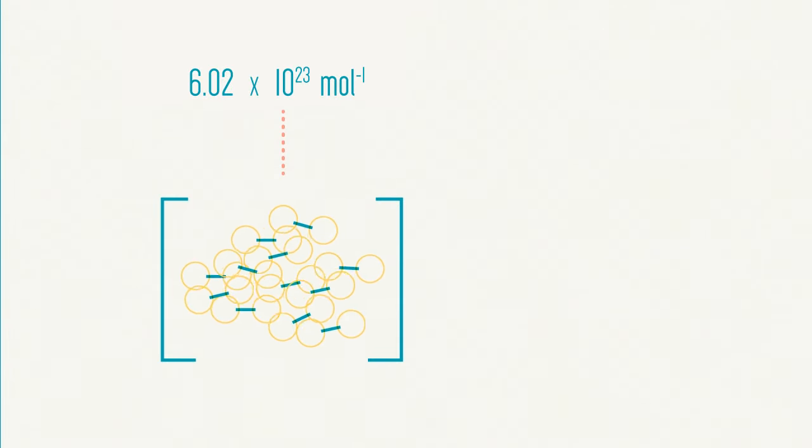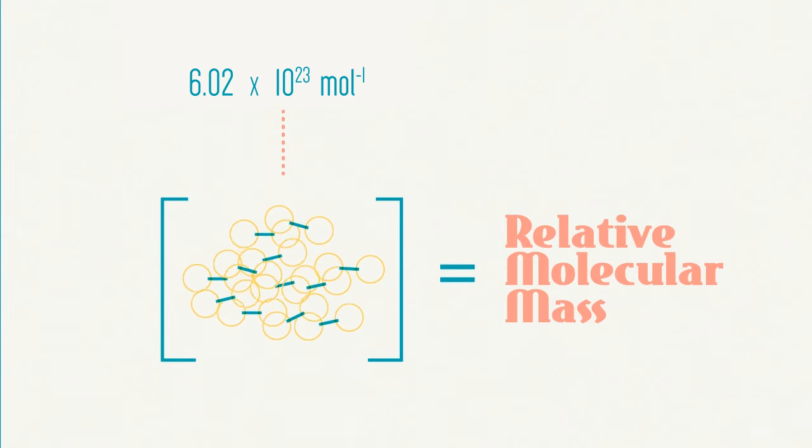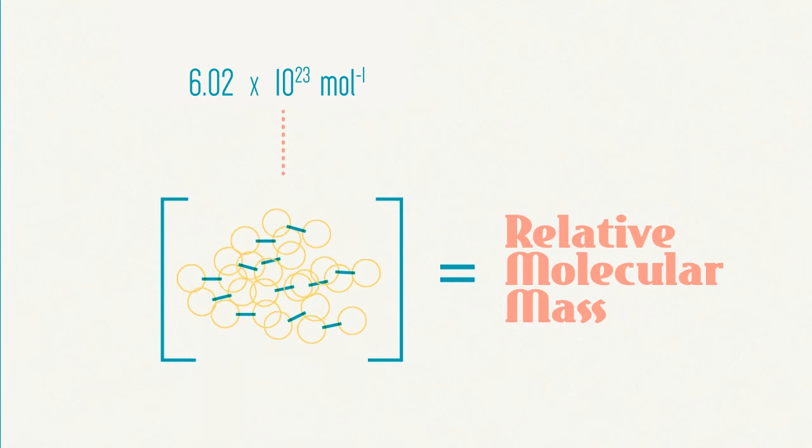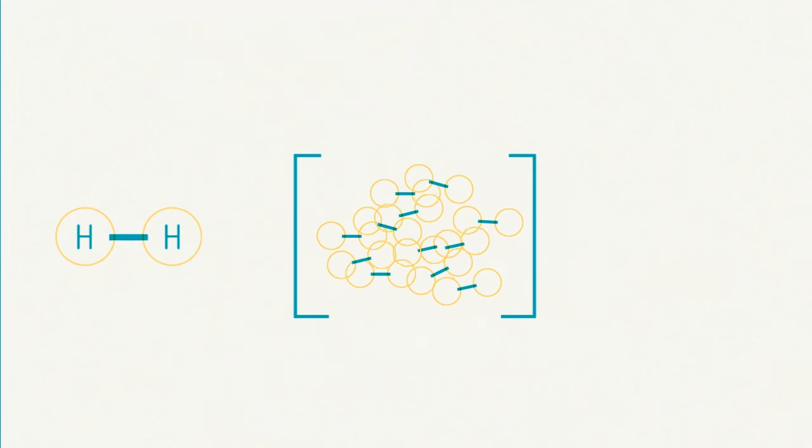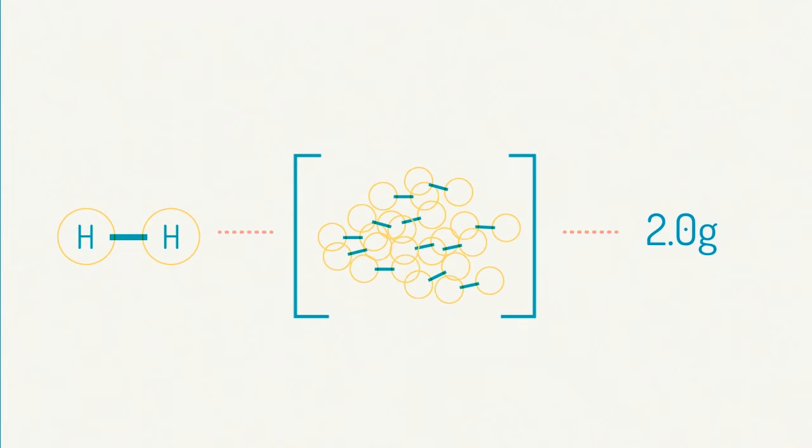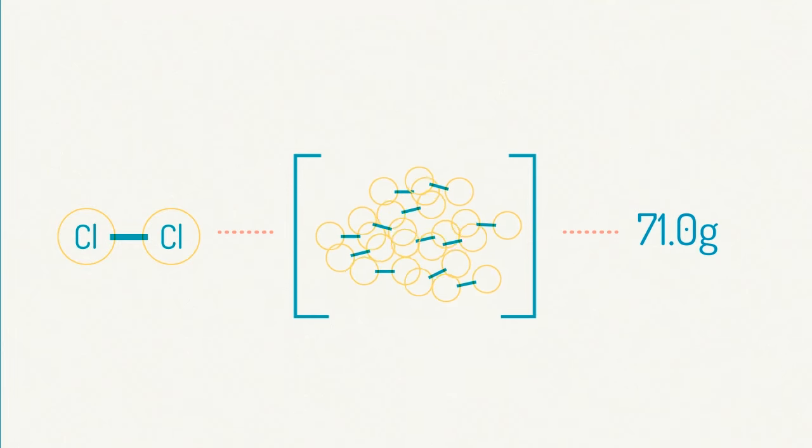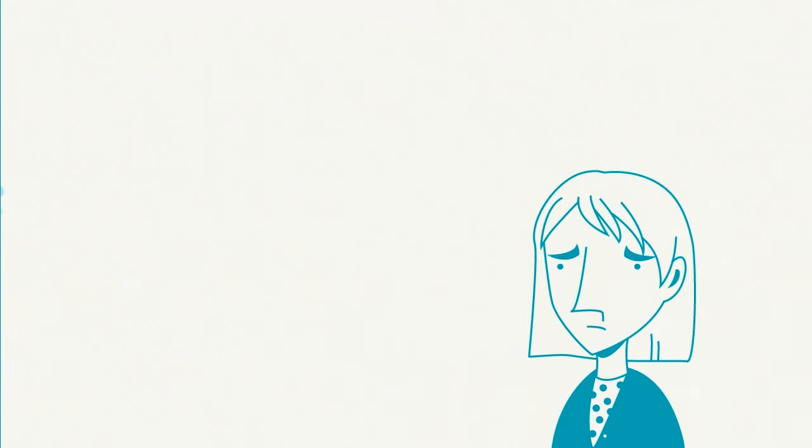For molecules, the mass of Avogadro's number of particles is equal to their relative molecular mass in grams. So, for example, the mass of Avogadro's number of hydrogen molecules, or H2, is 2 grams, and the mass of Avogadro's number of chlorine molecules, Cl2, is 71 grams.